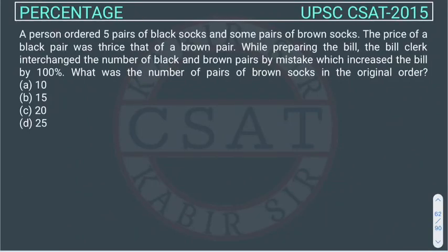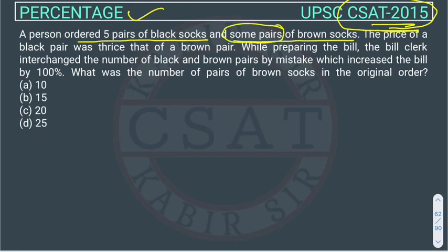This is a question from CSAT 2015 — a percentage question. A person ordered five pairs of black socks and some pairs of brown socks. The number of brown pairs is not given. There are two kinds of socks: black and brown. Black is five pairs and brown is not given.